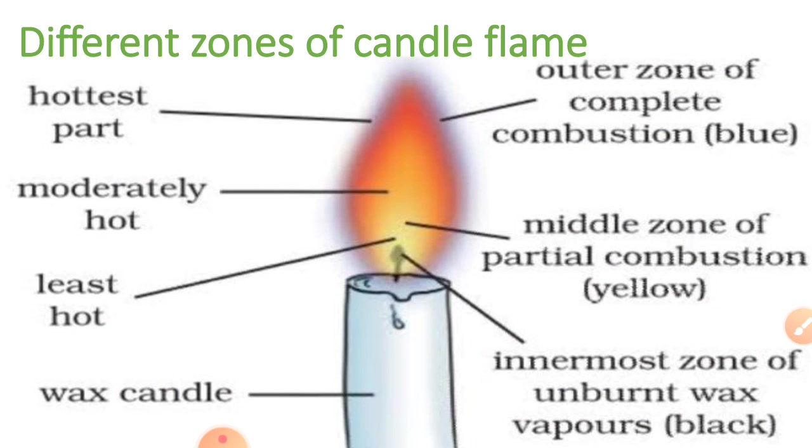You may have heard about goldsmiths. A goldsmith blows through a metallic pipe at the outermost zone of the flame when working with gold and silver. This is because the outermost zone is the hottest part of the flame. Since gold and silver have a high melting point, the goldsmith uses the outermost zone to melt them.